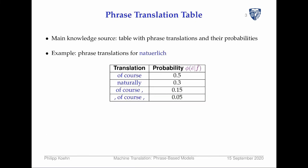The key thing that has to be learned is a phrase translation table. You need a table where the word 'natürlich' maps to 'naturally,' 'of course,' and so on with different probabilities. This looks a lot like a word translation table, and really is, except it's on phrases now.